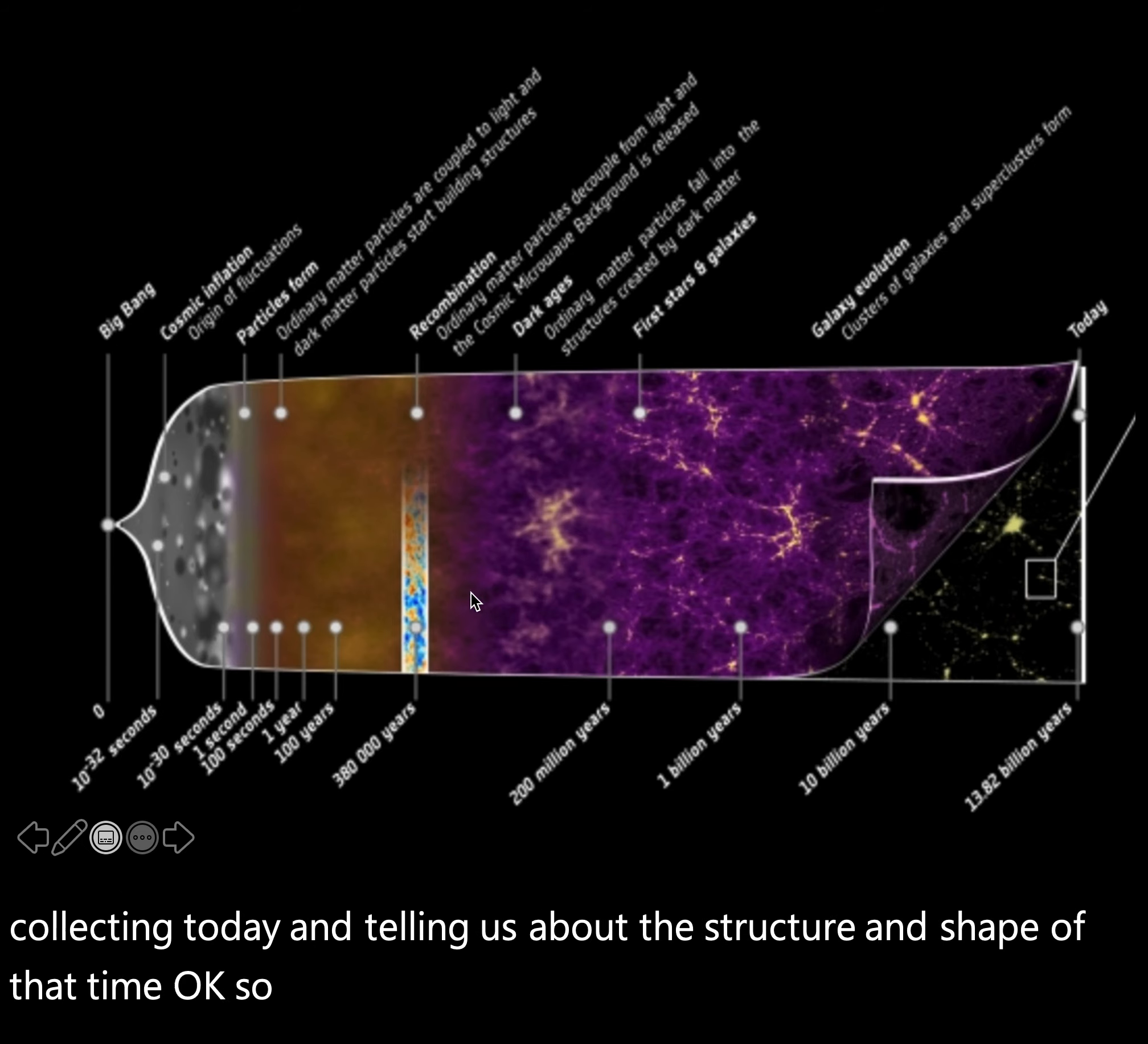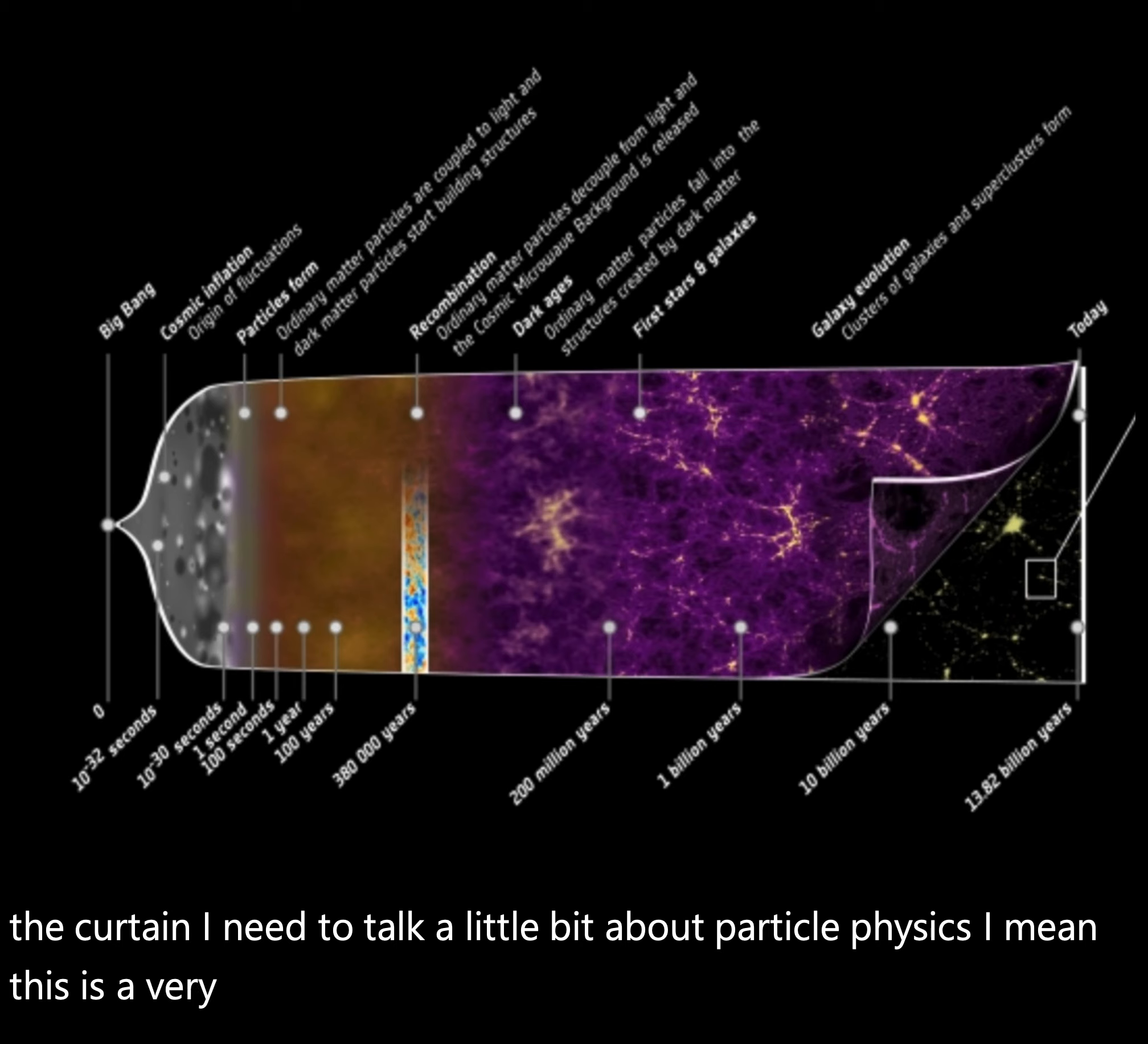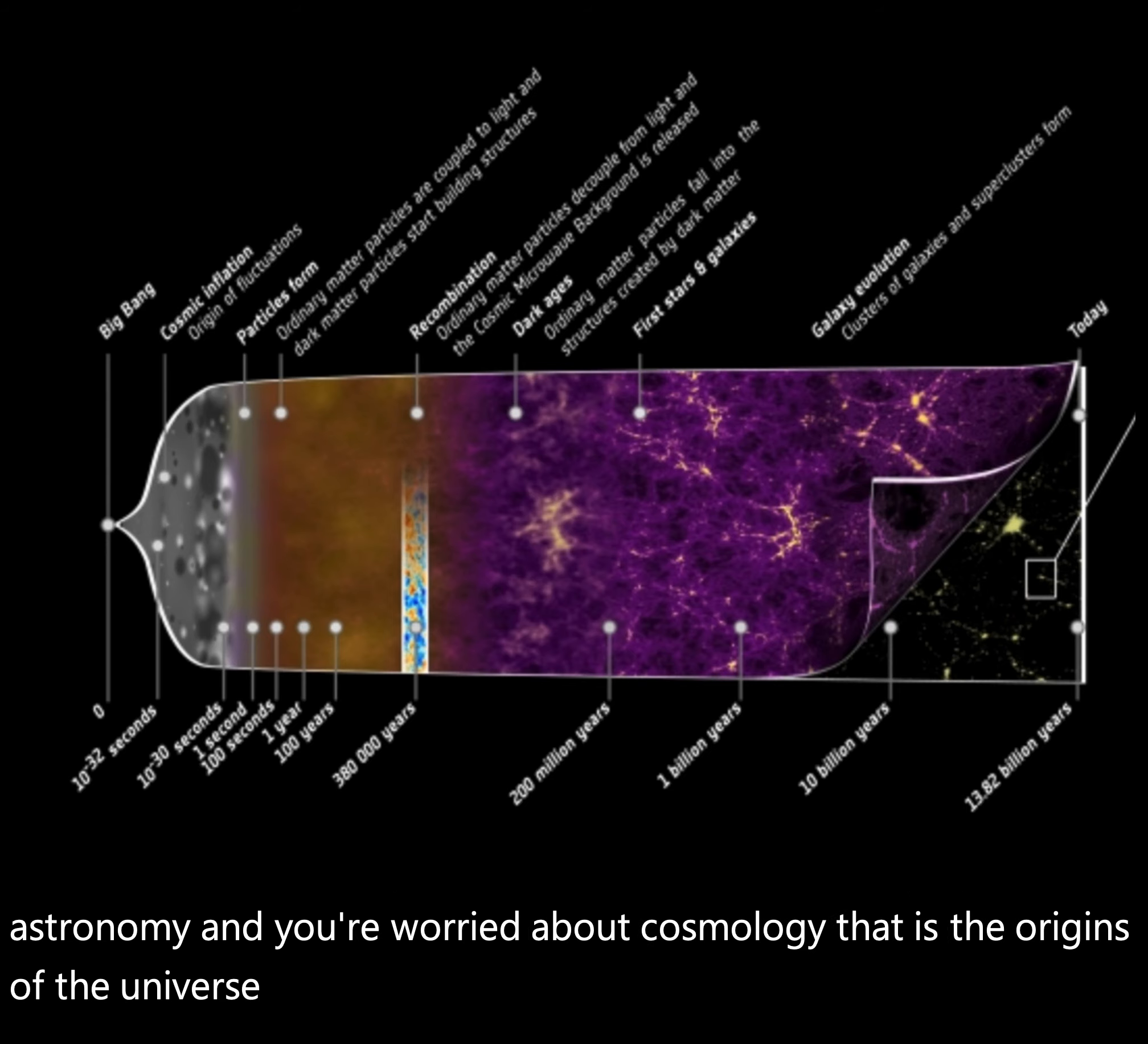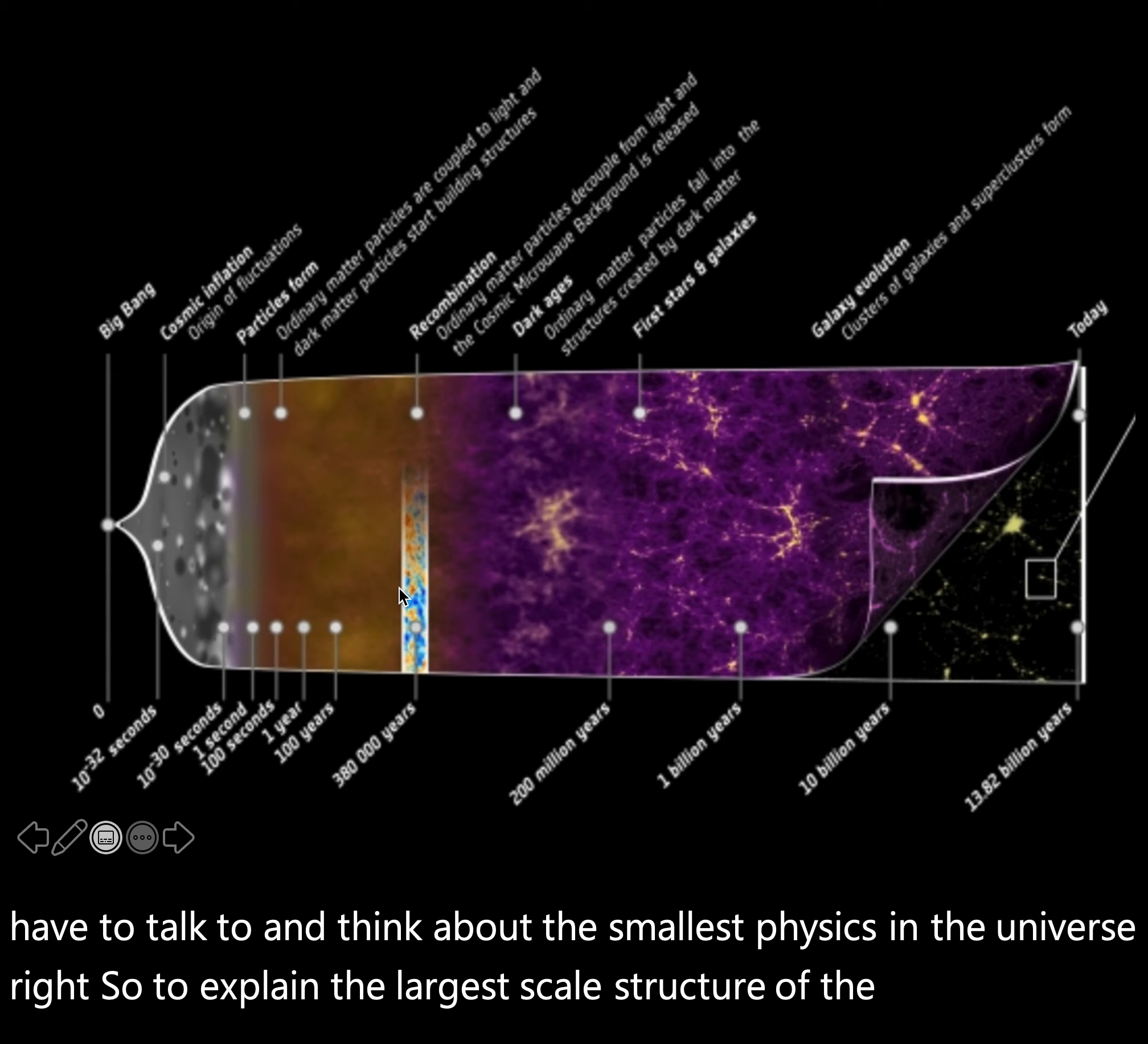So the story from there forward is understandable. Now, if we go behind that, go behind the curtain, I need to talk a little bit about particle physics. This is a very interesting thing: when you are studying astronomy and you're worried about cosmology, the origins of the universe, and trying to understand the sequence of events that I'm describing to you here, you actually come full circle and have to talk to and think about the smallest physics in the universe. To explain the largest scale structure of the entire universe, you have to understand particle physics.